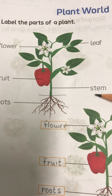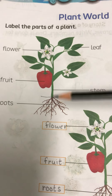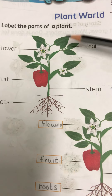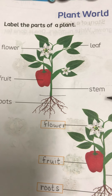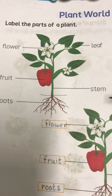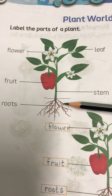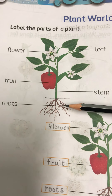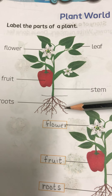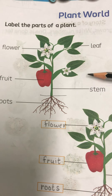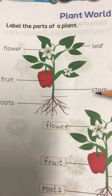Now, the next part is stem. Stem helps the plant to stand upright. And as I told you, the stem carries water and minerals from the root to the leaves, and carries food prepared by the leaves to different parts of the plant.